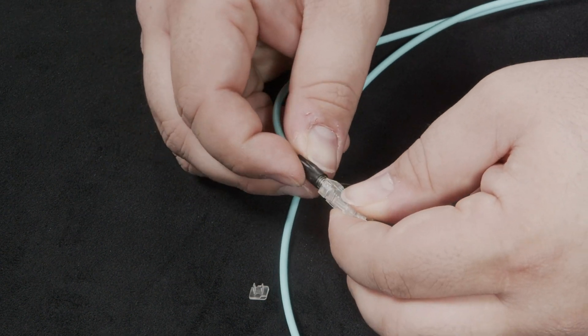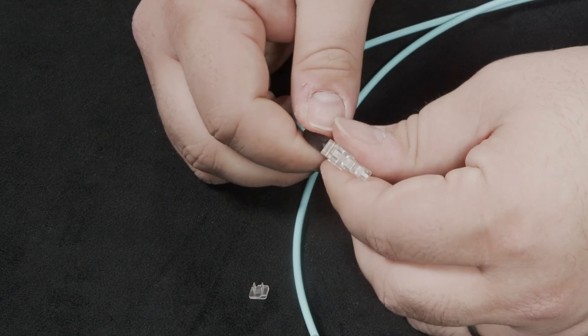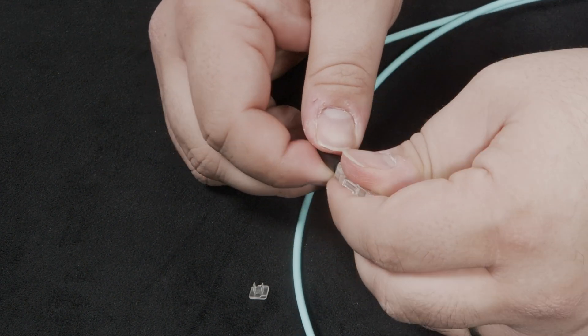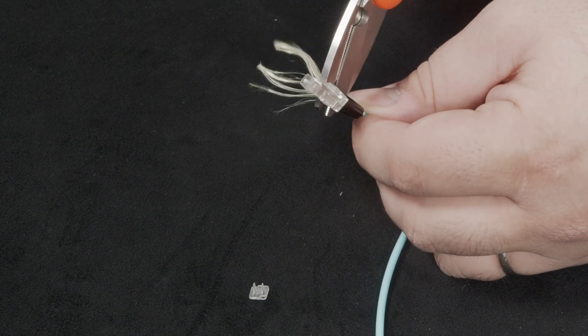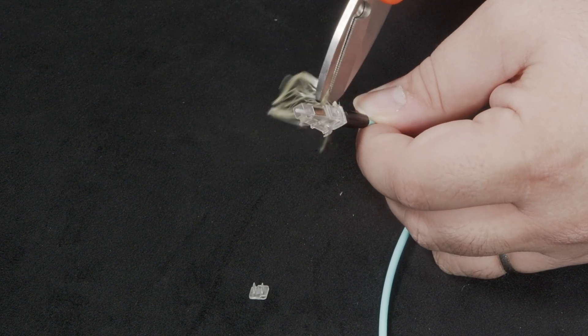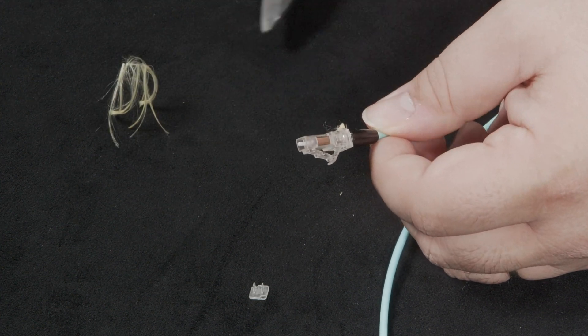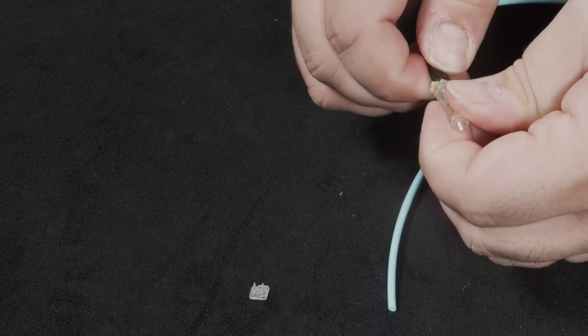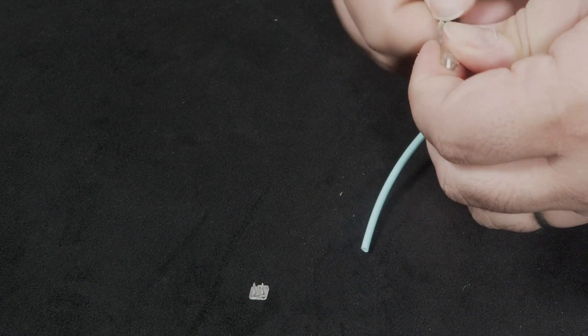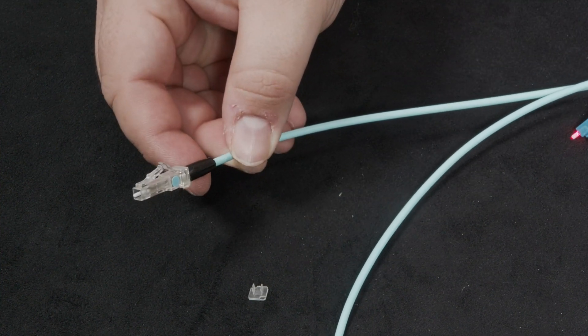Ensure that the Kevlar strands are pulled to the side and begin to screw the boot onto the connector. A tip, only screw the boot on a short amount. Then use the Kevlar scissors to trim the excess Kevlar. And finally, finish screwing the boot on the rest of the way to get a clean finish. And now we are finished with the LC connector.